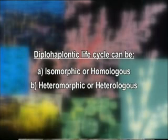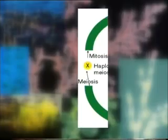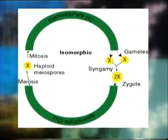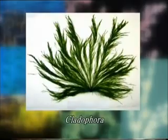First is the isomorphic or homologous type of life cycle. The diplo-haplontic life cycle in which alternating diploid sporophytic and haploid gametophytic individuals are morphologically similar or identical is called isomorphic or homologous diplo-haplontic life cycle. This type of life cycle is found in members of Phaeophyceae and Chlorophyceae such as Ectocarpus, Dictyota, Ulva and Cladophora, where the diploid sporophyte is identical to the haploid gametophyte.